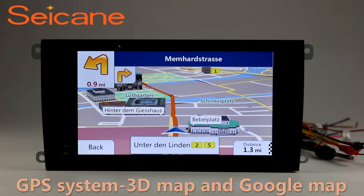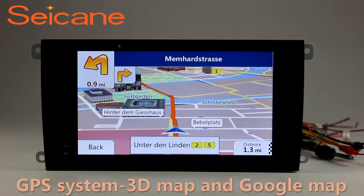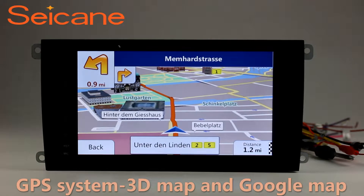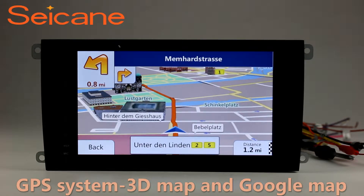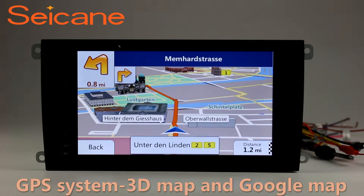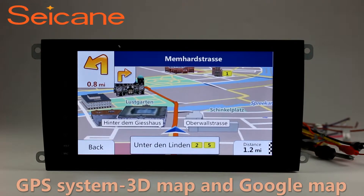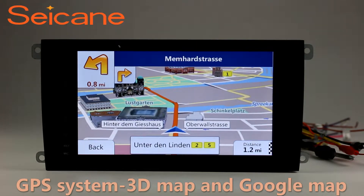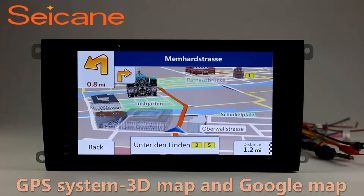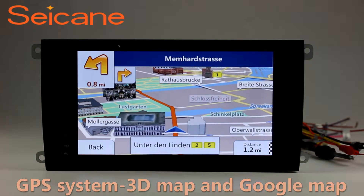GPS. Go to the main menu and open the GPS system. The 3D navigation map shows you accurate GPS locations and route information. It also supports Google Maps. You will never get lost with this function.